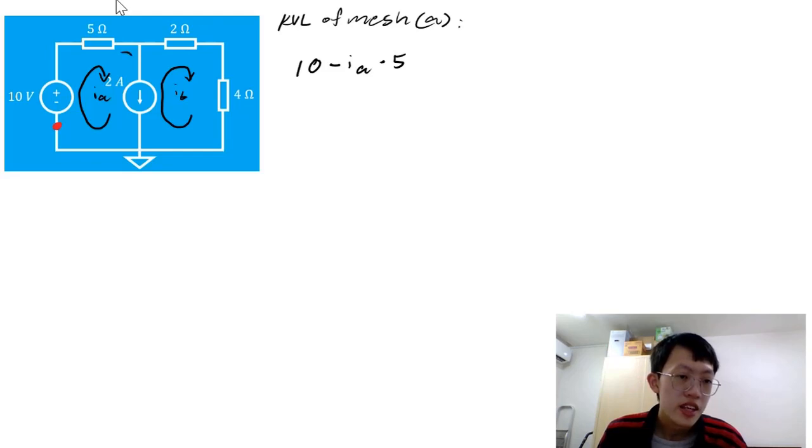And after that, you'd encounter this current source. Now remember, we are writing KVL equations here. In KVL, you had to sum up the voltage changes across each device. The problem is, we don't know how to describe voltage changes across current sources. You cannot use delta V equals to IR. They didn't even tell you what the R of the current source is.